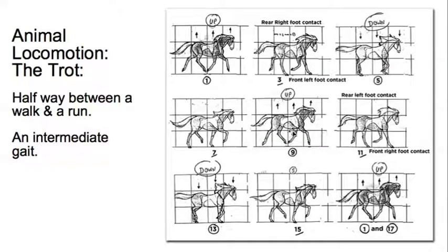Frame 9 is the halfway or mirror image, and then halfway between those is 5 and 13. Then we can slot in 3, 7, 11, and 15. So again, as with the walk, you've only got to do eight actual positions. But there's enough information there that you can animate it successfully, but not so much that you get confused.